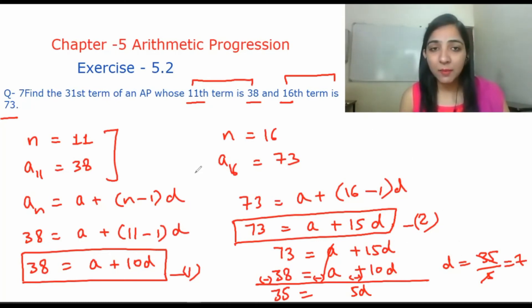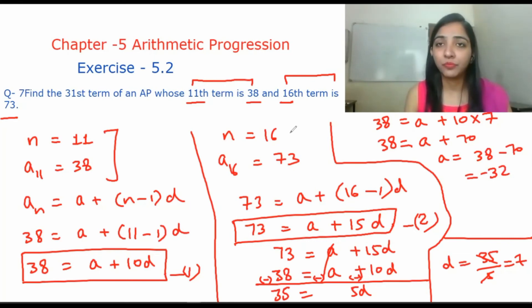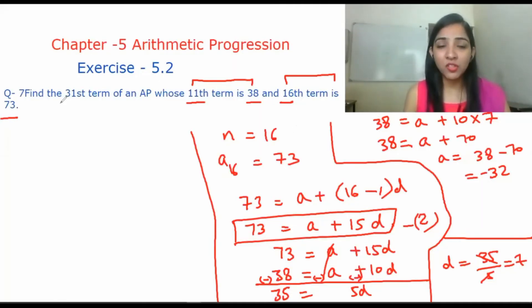38 is equal to a plus 10 into d value, which is 7. Then a is equal to 38 minus 70, which is minus 32. So a equals minus 32.